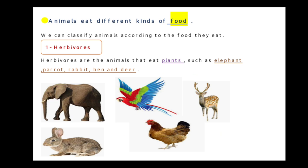Number 1. There are animals that eat plants, like elephant, parrot, rabbit, hen, and deer. These animals are called Herbivores.